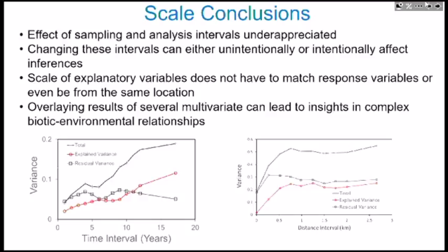Another question about whether life history traits — particularly generation time — were considered. Only to the extent that some variables were lagged by one and two years to see if they came up as important, because it sometimes takes several years for a species to respond to environmental change and also to grow into the sampling gear. This works for some of the longer-lived species.